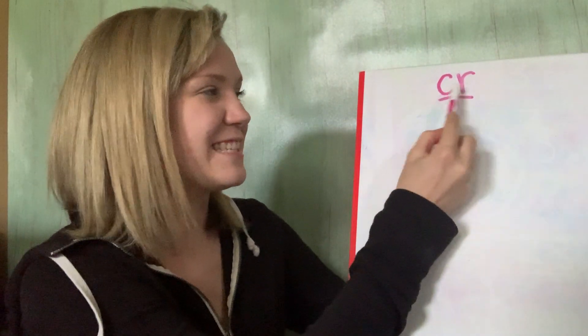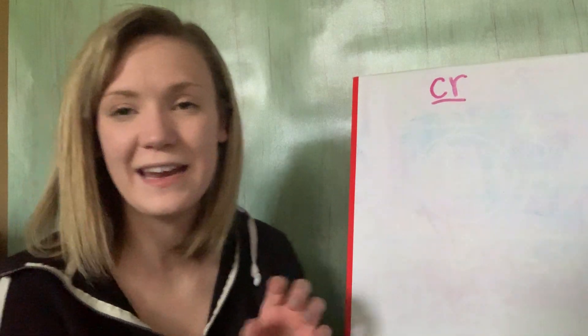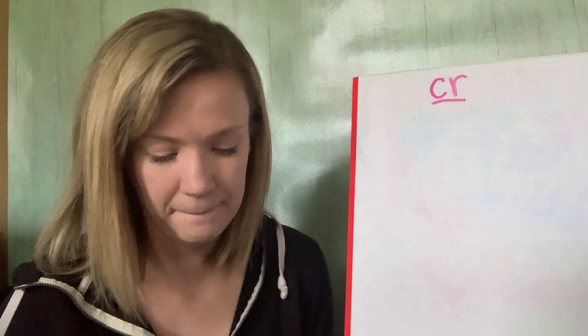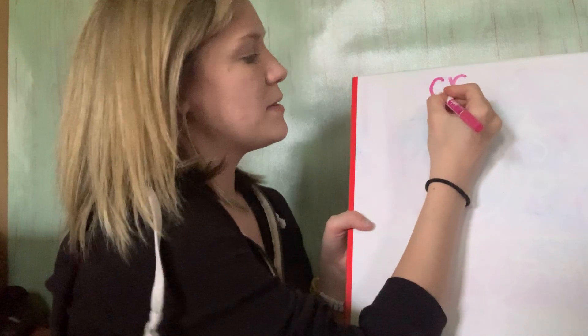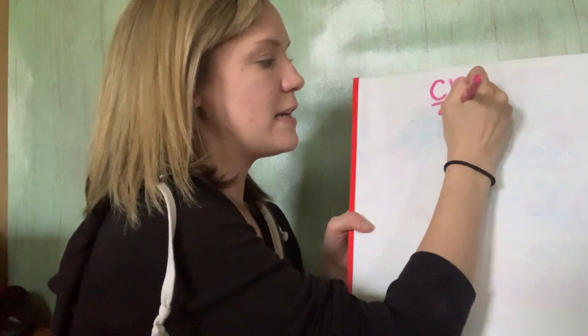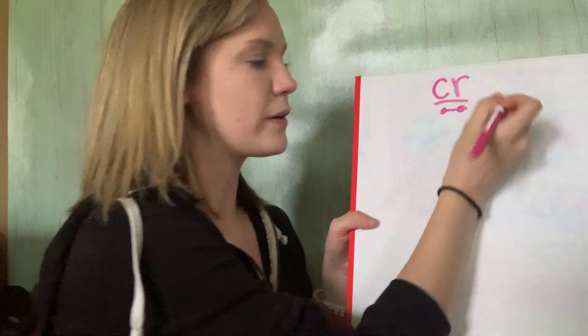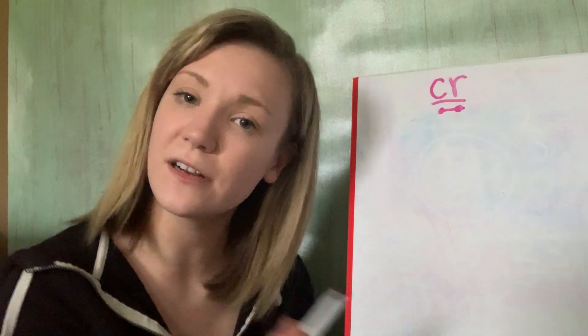It has a C and an R. Let's go ahead and chop it and slide it and see what sound we get when we put a C and an R together. All right. So C says C, R says er. Cur. Can you make that sound? Cur. So anytime you see a C and an R, it's going to make that sound. Cur. All right.